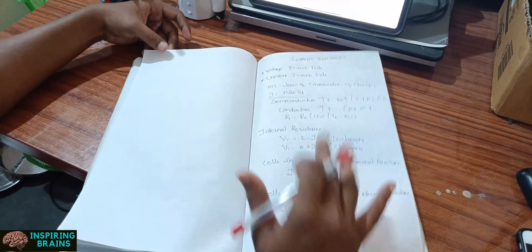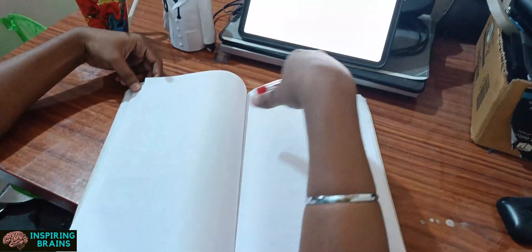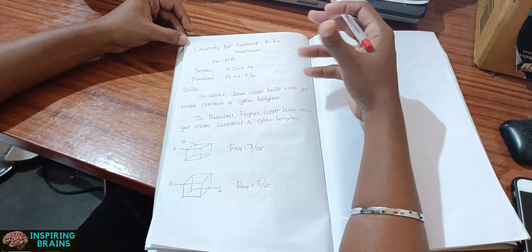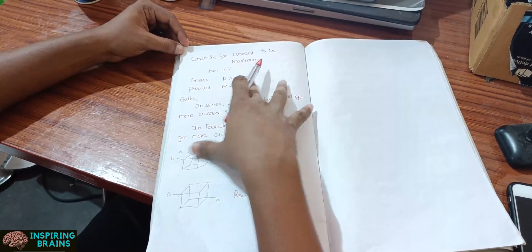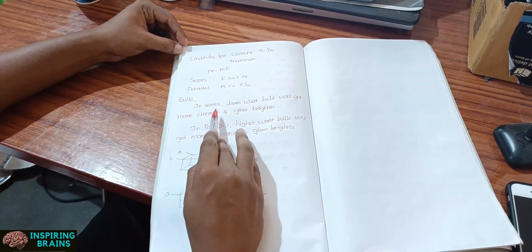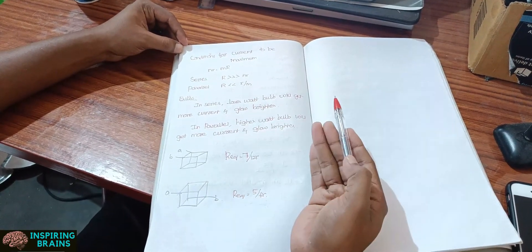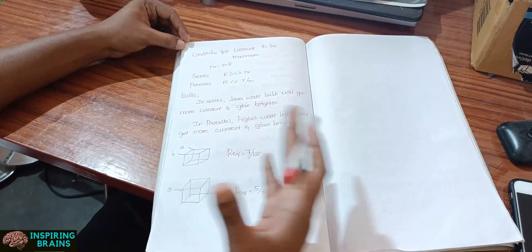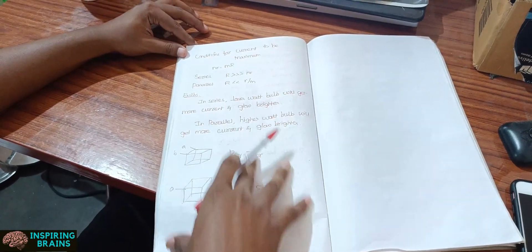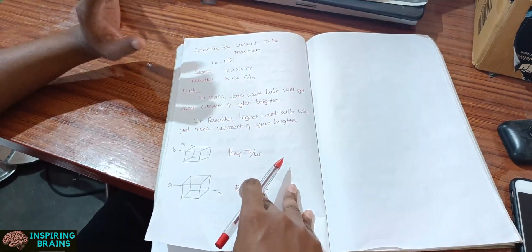So for example, so this is the formula list and the next page, I just left it out for free. And after solving all these questions, what I will do is, so these are all the things which I actually got from solving the questions. So, and I just write it, so conditions for current to be maximum in series and parallel and bulbs in series, lower watt bulb will get more current and glow brighter, whereas in parallel it will be opposite. And there are some circuit connection and there will be equivalent resistance. So these are all the things which I got from solving the questions. And I just noted down in the second page. So the first page is for formula, the second page for the things which I got through solving the things.